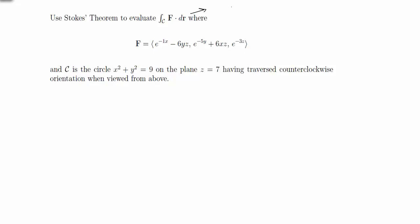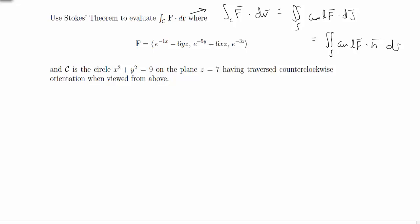What that means is you want to use the equation for Stokes' theorem. We're given the curve integral, and we say that equals the surface integral of the curl of the vector field dot dS. We can rewrite that as the curl of the vector field dot a normal vector, then just dS. So we have to find all these parts and evaluate this, because we're given the curve. In other cases, you might be given a surface and want to evaluate the curve integral part.